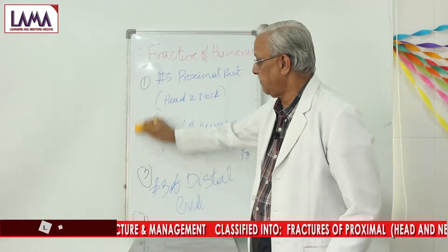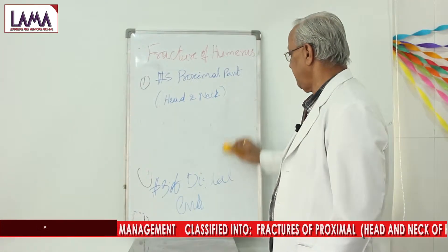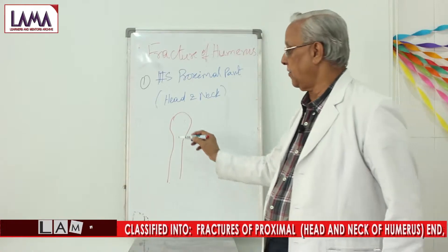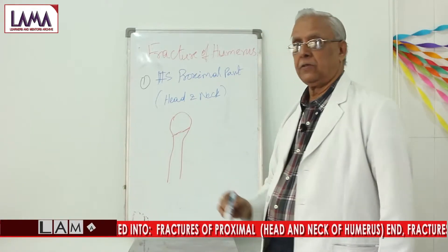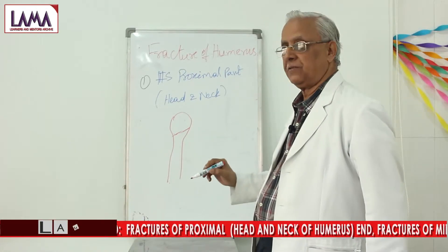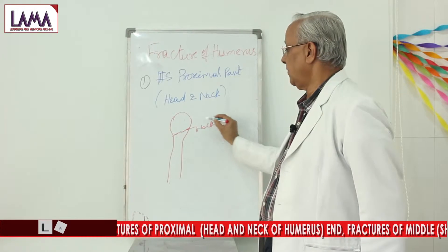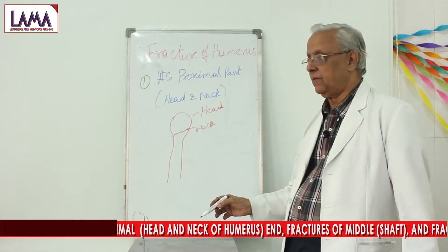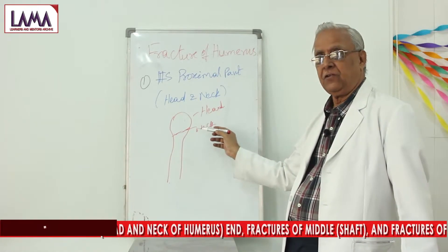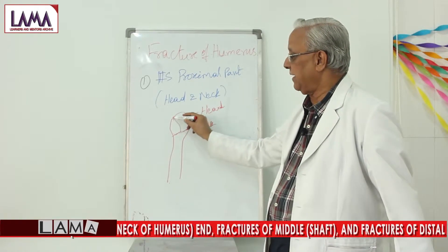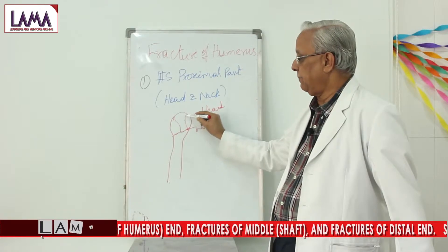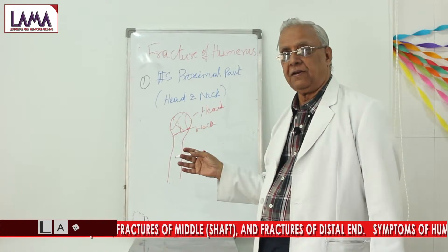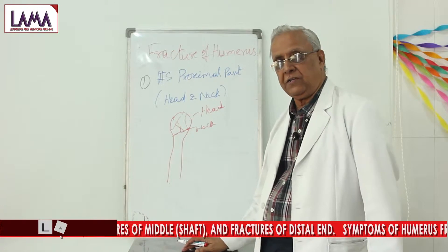Now we will talk about fractures of the proximal end or head and neck of the humerus. The humerus has a neck and a head. The simplest is the fracture neck of humerus without displacement. Sometimes it may be associated with a head fracture — it may be a two-part fracture, a three-part fracture, or sometimes four parts. Depending upon the number of pieces, we have to decide what is to be done.